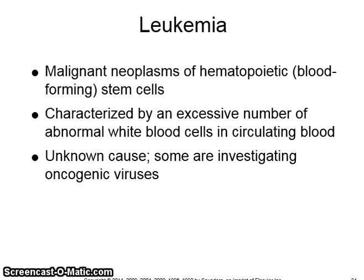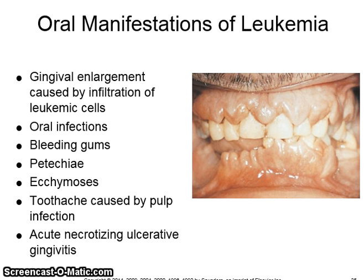Leukemia is a malignant neoplasm of hematopoietic stem cells characterized by an excessive number of abnormal white blood cells in the circulating blood. It is of unknown origin, and some are investigating viruses as a cause. Oral manifestations include gingival enlargement, oral infections, bleeding gums, petechiae, ecchymosis, toothache, and acute necrotizing ulcerative gingivitis.